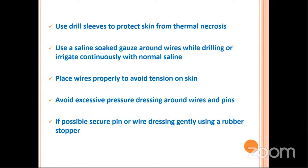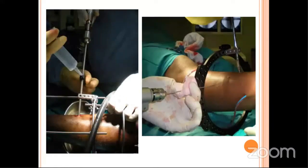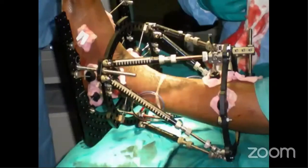A saline-soaked gauze should be used around the wires to dissipate heat. Some use saline and nowadays some use chlorhexidine-soaked gauze. The wires should be placed properly and should never be under tension — if there is tension, there is every chance of pin track infection. Avoid excessive pressure around the wires and pins. If possible, secure the dressing with a rubber stopper. You can see in the photographs: the drill being used before placing the half pin, saline irrigation to dissipate heat, gauze placed — pink in color because chlorhexidine has been used — and rubber stoppers around the dressings.